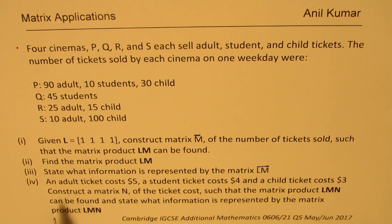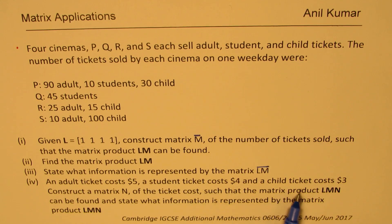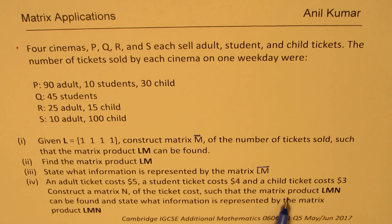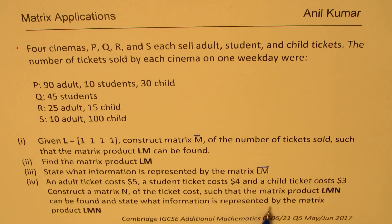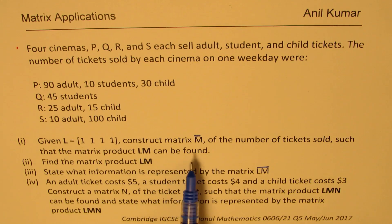An adult ticket costs $5, a student ticket costs $4, and a child ticket costs $3. Construct a matrix N of the ticket cost such that the matrix product LMN can be found and state what information is represented by the matrix product LMN. This is a very beautiful question — it relies on the concept of multiplication of matrices.